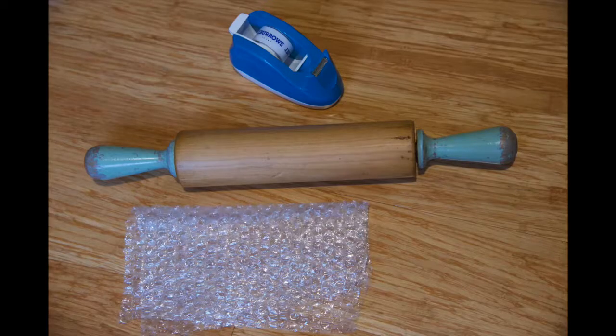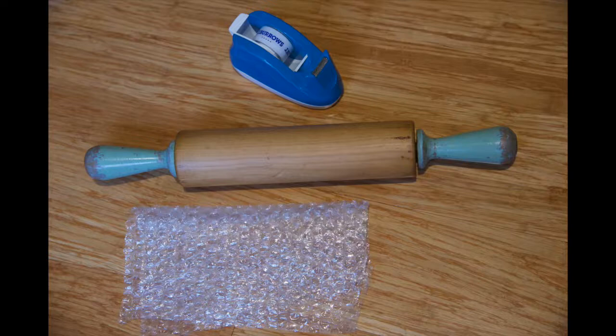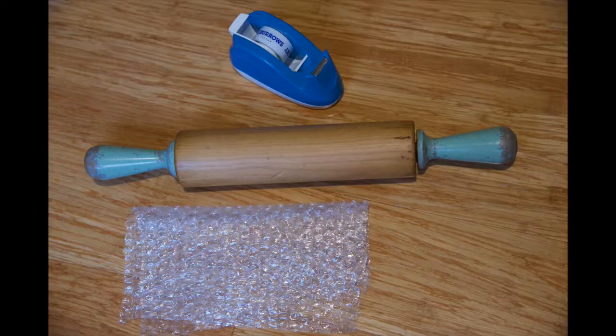If you're anything like me, you'll have a lot of bubble wrap lying around the house. Today I'm going to show you how to use some of that bubble wrap to get a really cool bubbly effect on your painting. To do this you're going to need some sticky tape, a rolling pin, and some bubble wrap.